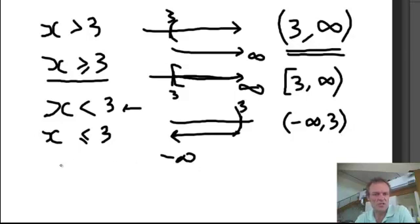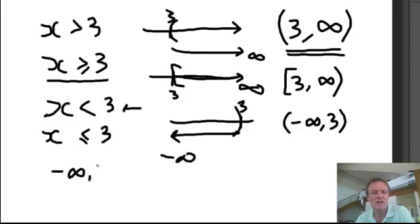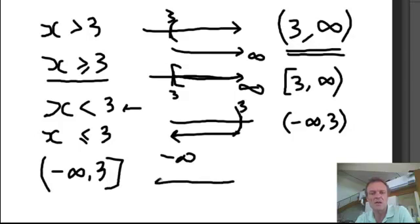And finally, for x less than or equal to 3 — we'll just have the bracket instead. So this is going from negative infinity as far as 3, and that's got the bracket. We sketch the number line going that way, there's the 3, and I just do a bracket like that.